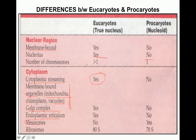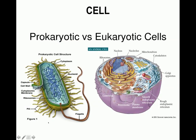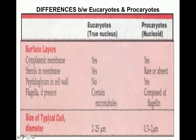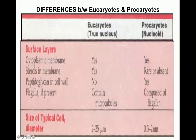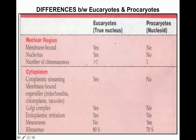Mesosomes are invaginations of the cytoplasmic membrane, seen in prokaryotic cells but not in eukaryotic cells. The ribosomes of eukaryotic cells are larger - 80S - compared to prokaryotic cells where they are 70S.